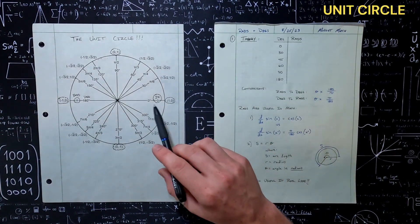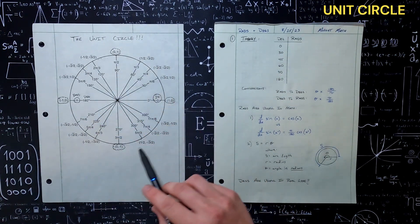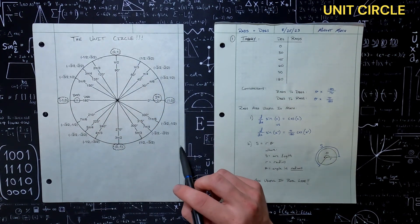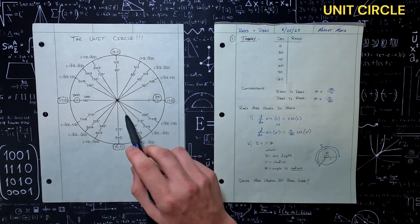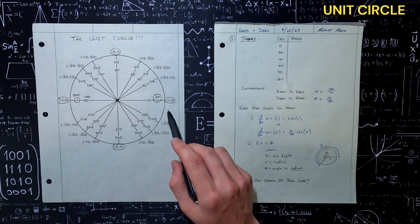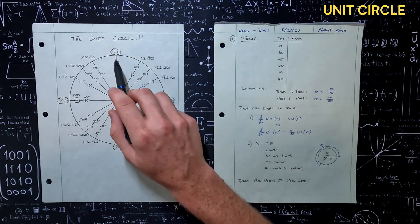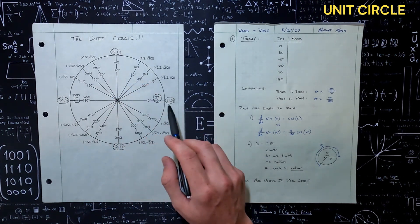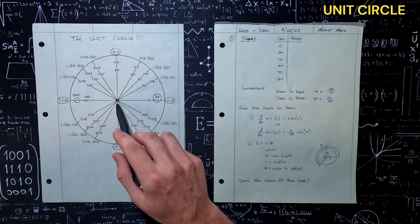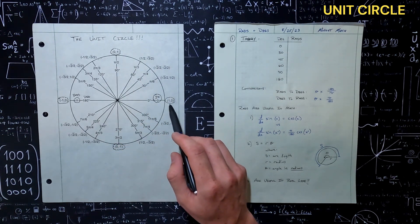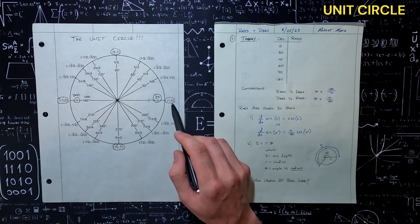But if you haven't, let's get ourselves familiar with the unit circle and understand what's actually going on here. The definition of the unit circle is that it has a radius of 1. So here we have our x-axis and our y-axis. The coordinates, if we're centered at 0,0, our x value is 1 and our y value is 0.